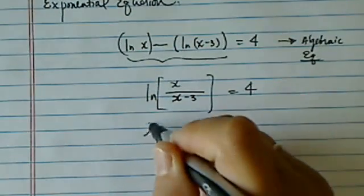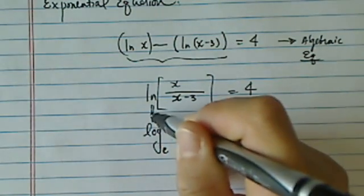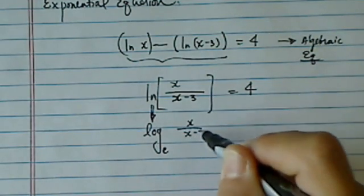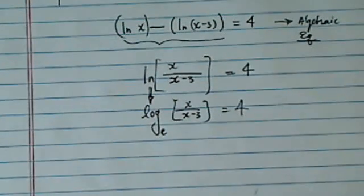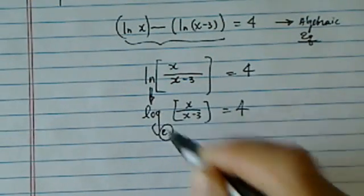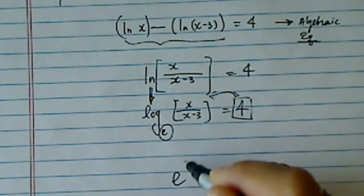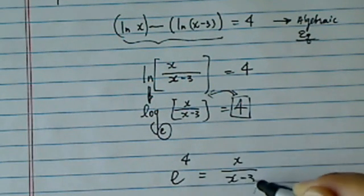And then from here, if it's easier to see, natural log is really log with base of e. Once you have it into this form, what you do is you keep the base, which is e, and you're going to swap, kind of like a gift exchange. Natural log of 4 equals x over x minus 3.